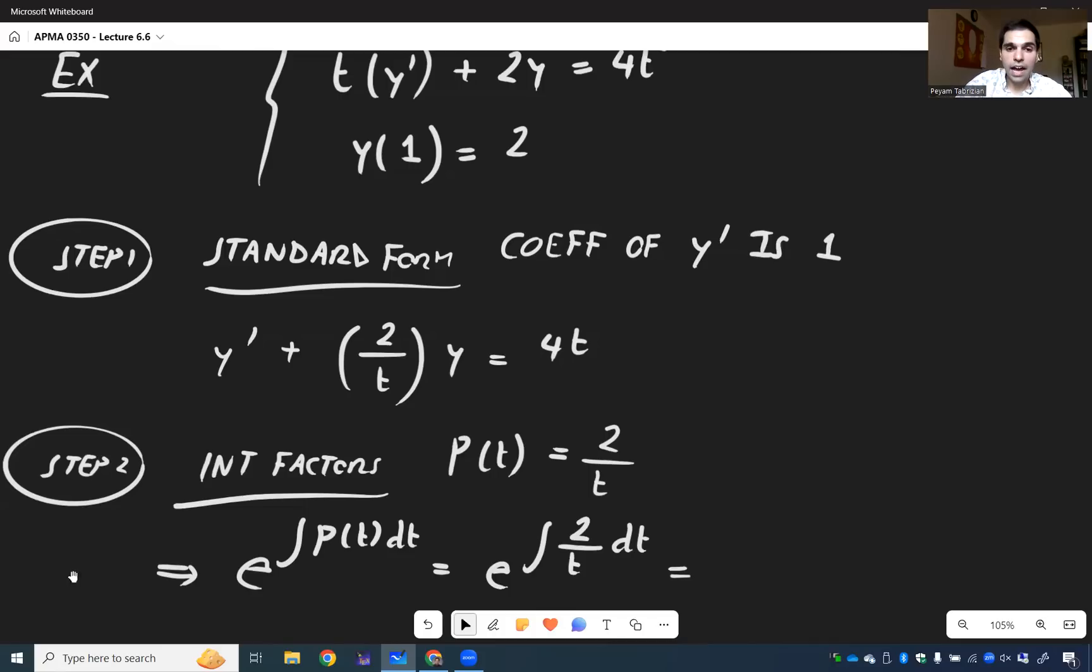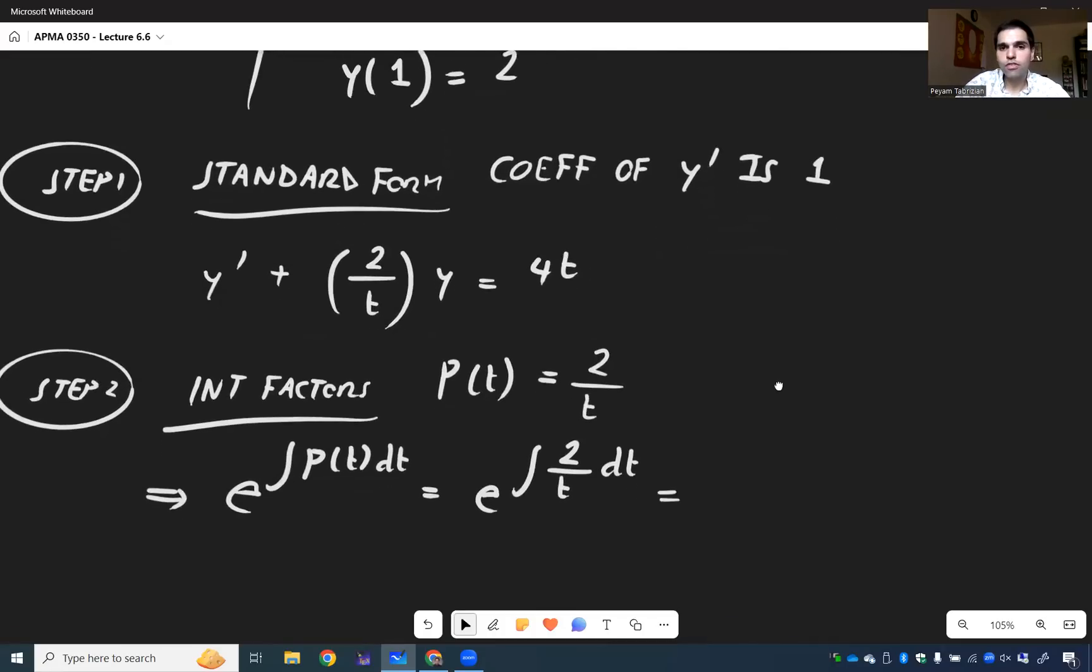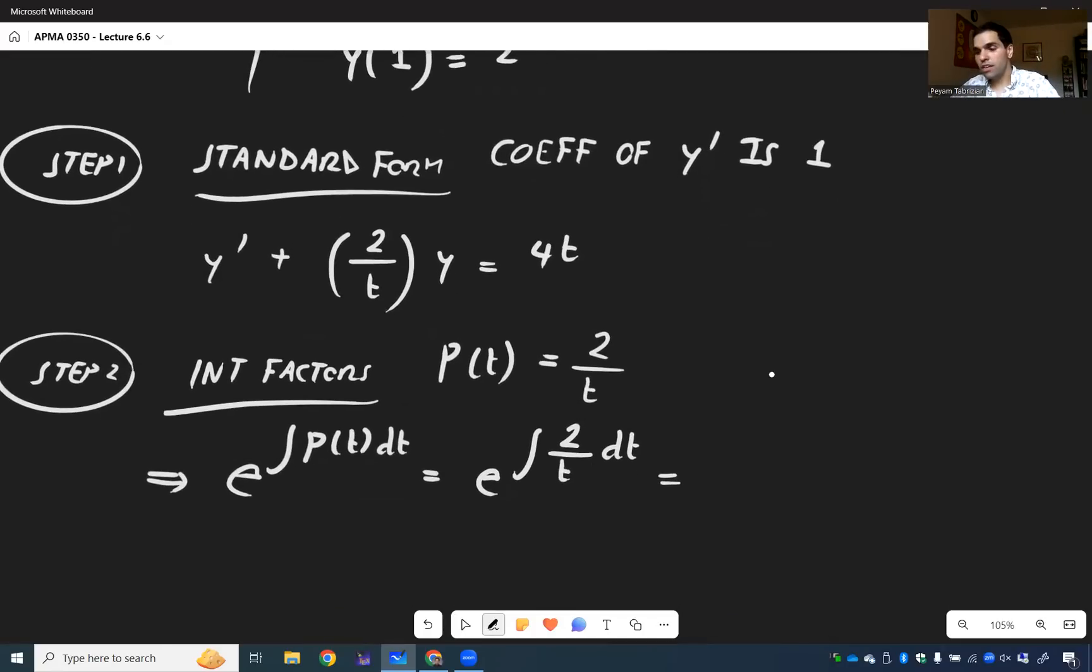And remember, an anti-derivative of two over t is two ln of t. So in this case, e to the two ln of absolute value of t, and then don't forget your laws of exponents. So ln of absolute value of t squared. And e and ln, they're best friends or best frenemies because they cancel each other out.